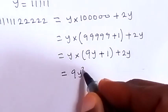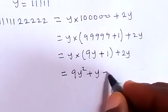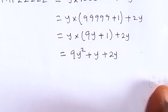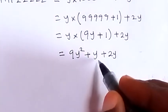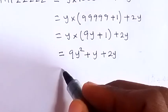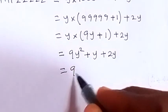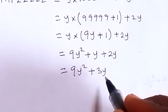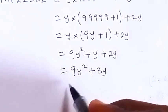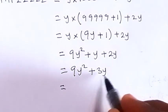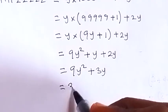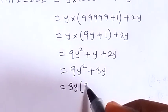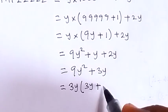So the right-hand side becomes y multiplied by 9y plus 1, then plus 2y. When we open the bracket, this gives us 9y squared plus y plus 2y. Combining like terms, y plus 2y becomes 3y, so we have 9y squared plus 3y. We can factor out 3y to get 3y times the bracket 3y plus 1.